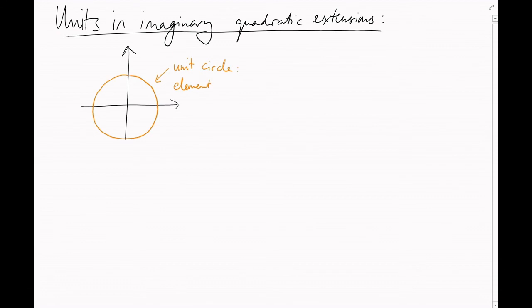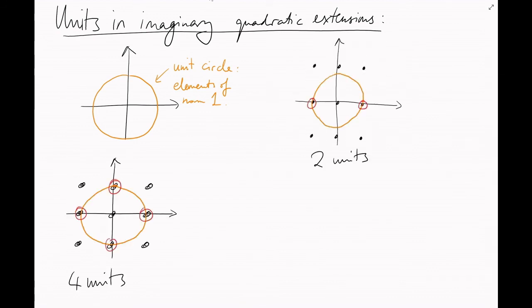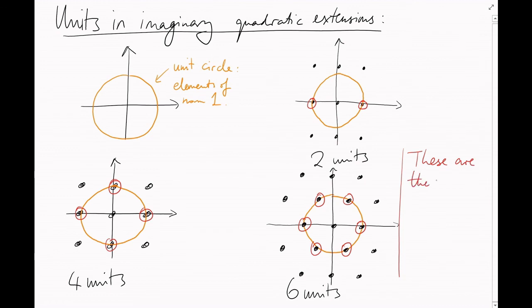We use this in calculating the norms of imaginary quadratic fields. Elements of norm 1 lie on this circle about the origin. And there can only be finitely many lattice points on this circle. We've seen cases where there were 2, 4, and 6 units. It's not too hard to convince yourself that, in this case that's all we can possibly have.